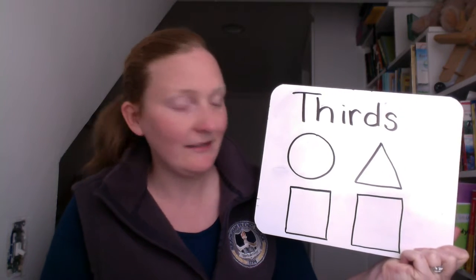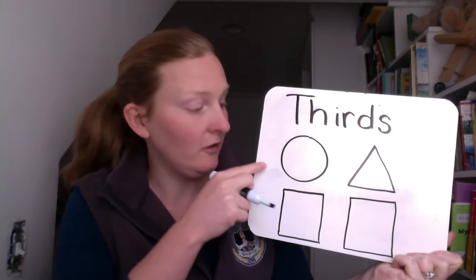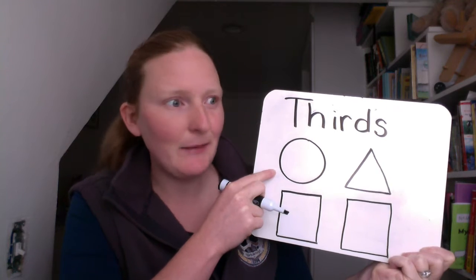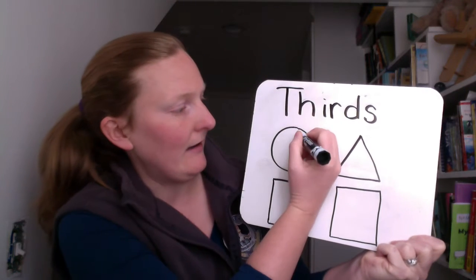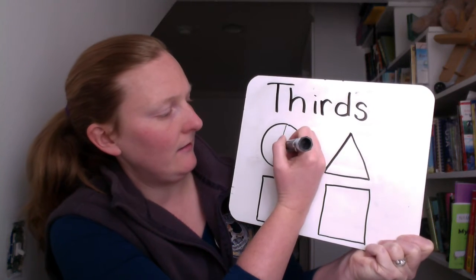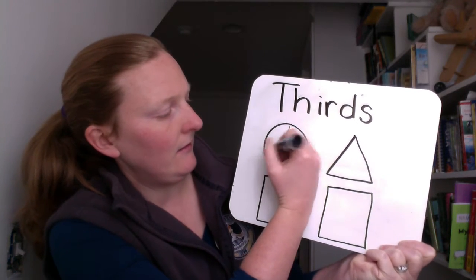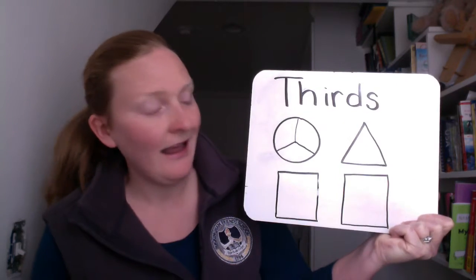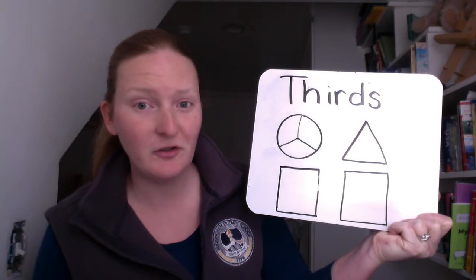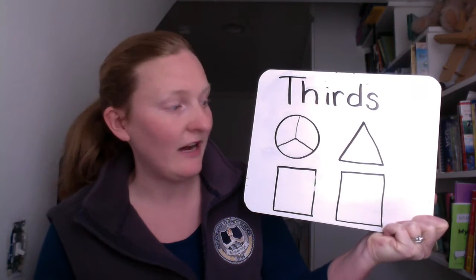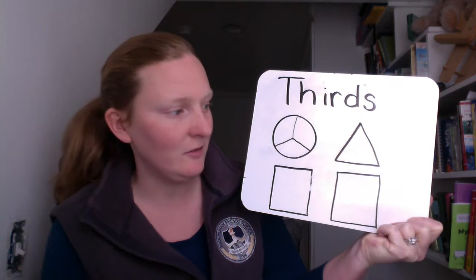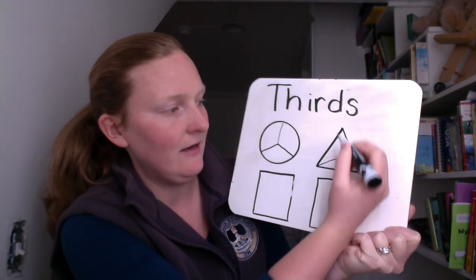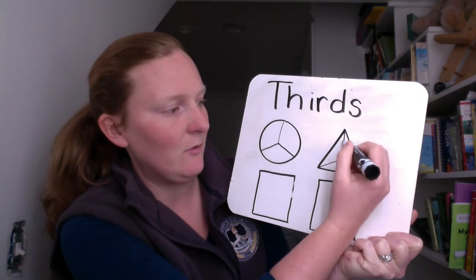If you want to slice this circle into thirds, the best way to do that is to make a piece sign like this. The same is also true for a triangle. Triangles can also be split by using piece signs into thirds, just by using the corners.